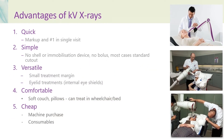What are the advantages of kilovoltage x-rays? It's quick — you can do the markup and the first fraction in a single visit. It's simple, and generally no shell or immobilisation device is needed. No bolus is needed, which you would need for electrons, and in most cases you can use the standard lead cutout. It's also very versatile, with a small treatment margin due to a low penumbra, and you can treat eyelid lesions by using internal eye shields. It's very comfortable — particularly for old and frail patients, you can use it on a soft couch with pillows, and you can even treat the patient in a wheelchair or on a bed. It's also cheap in terms of machine purchase cost and consumables.